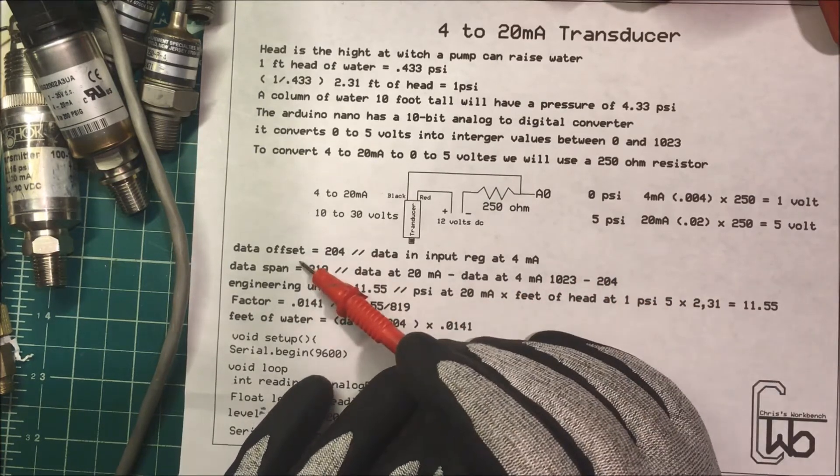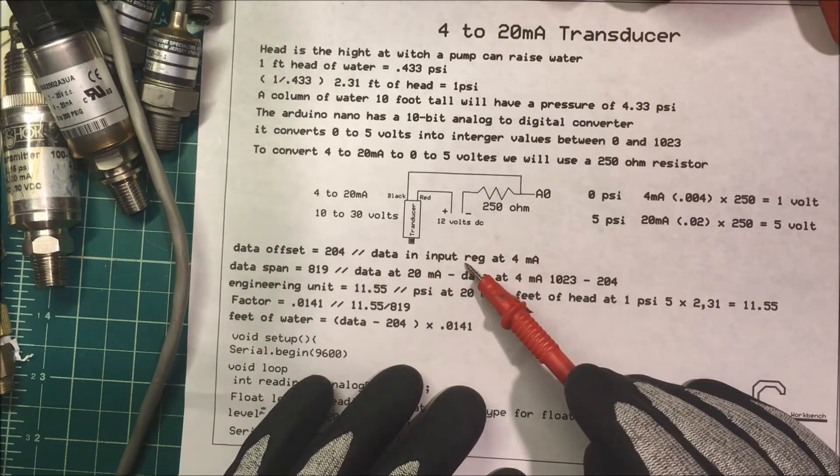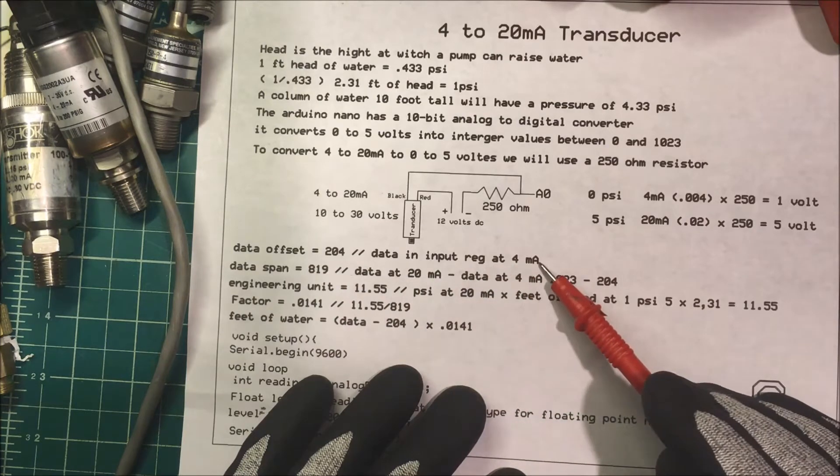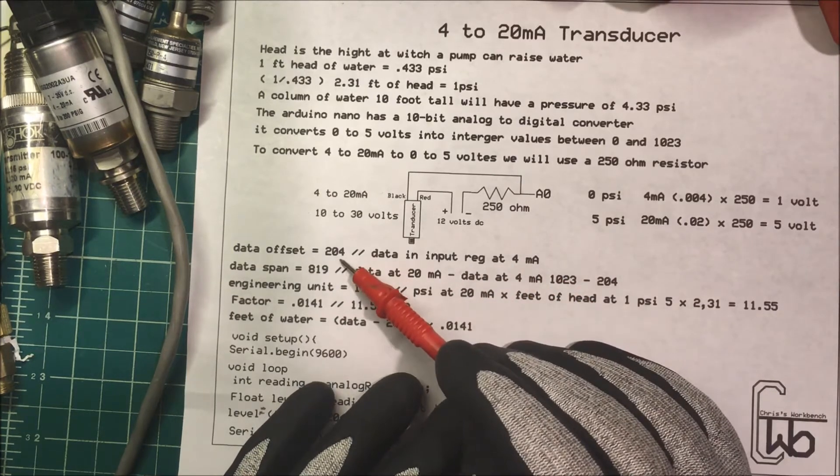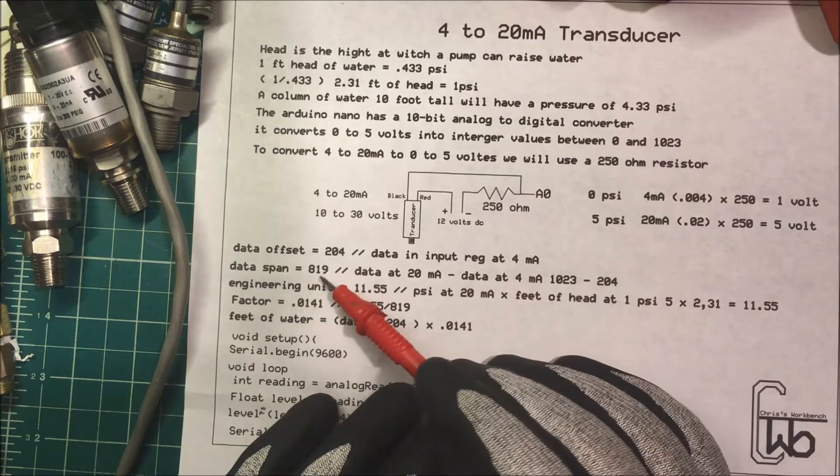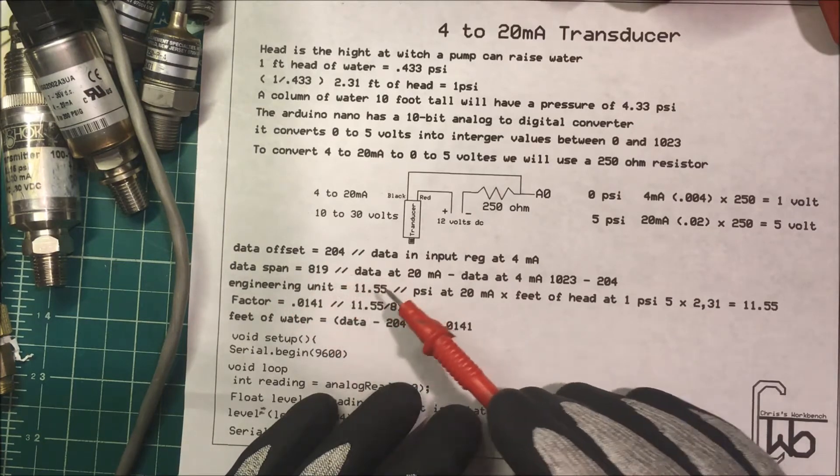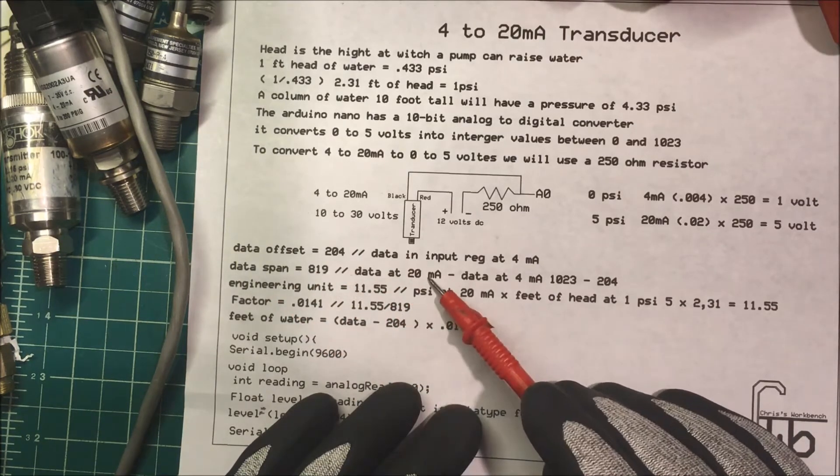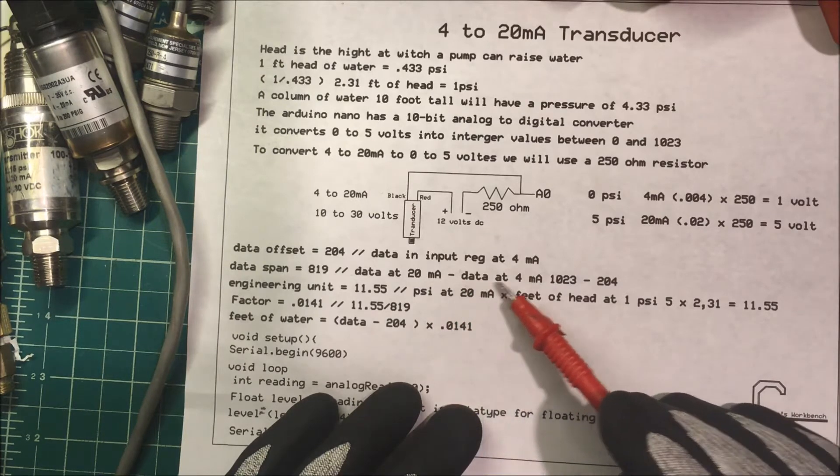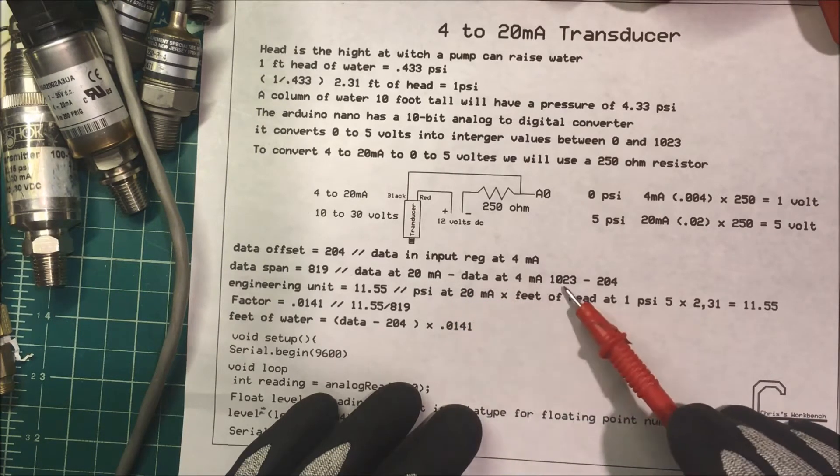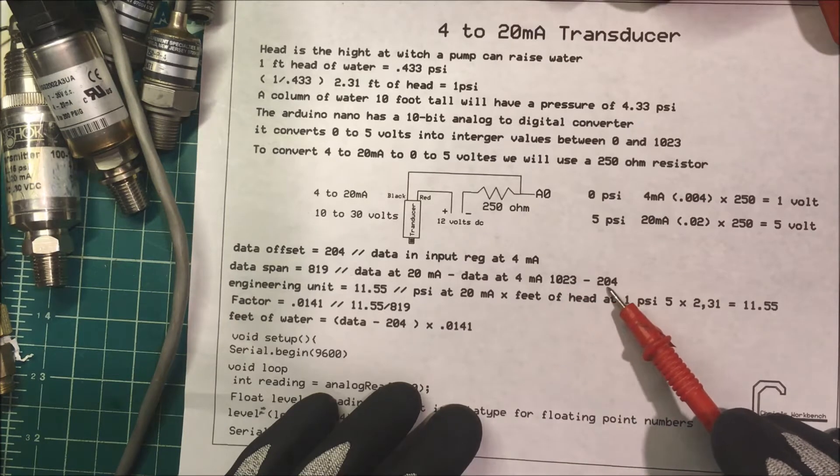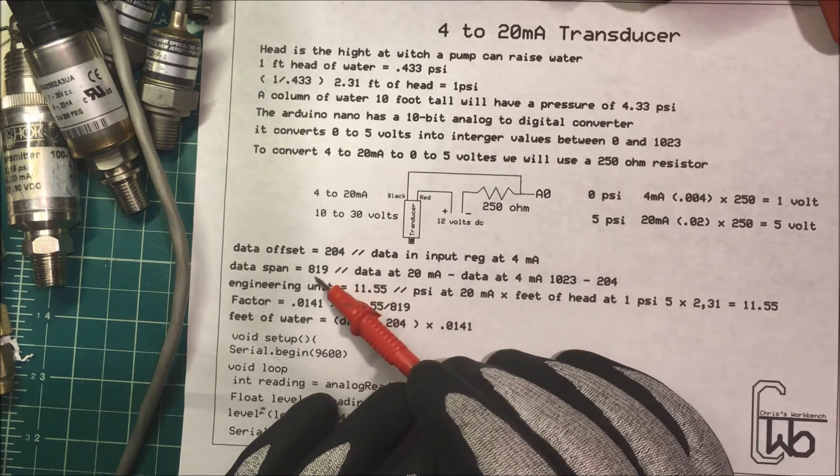So the data offset is just the data that's in the input register at 4 milliamps, and that's going to be 204. Now the data span is going to be 819, and that's just the data at 20 milliamps minus the data at 4 milliamps. So at 20 milliamps it's going to be 1023, and we subtract 204 from that and we get our data span.